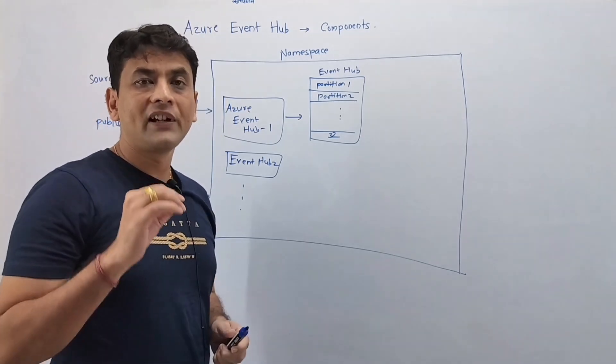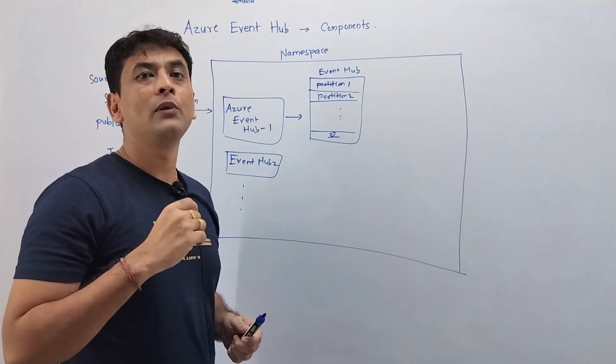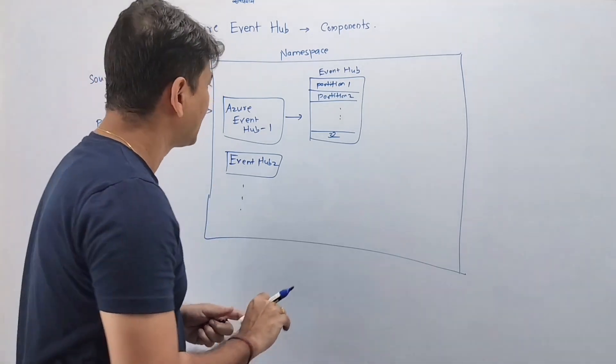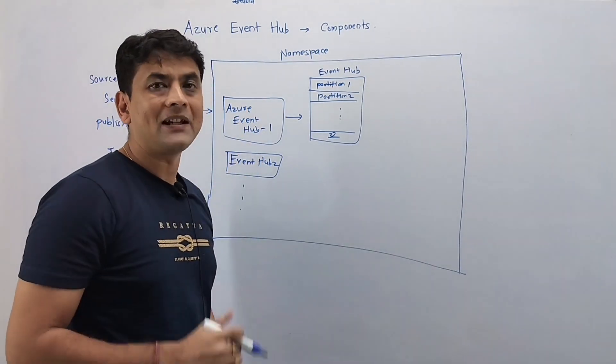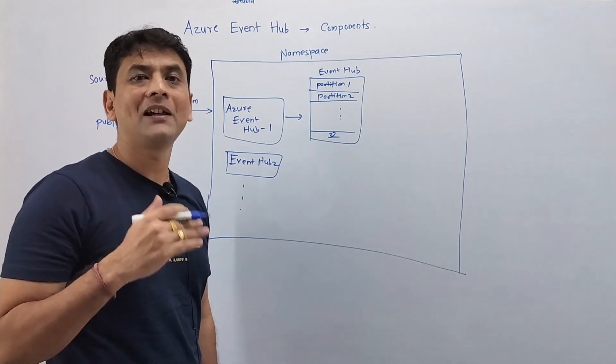Now, to read or to retrieve data from Event Hub, we have consumer groups. So again, a single Event Hub can contain one or multiple consumer groups.